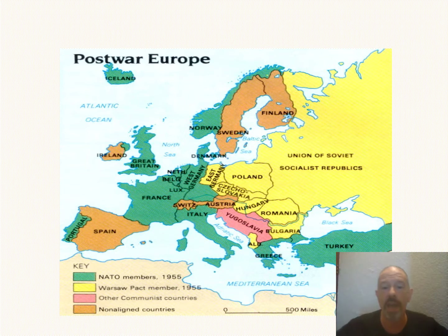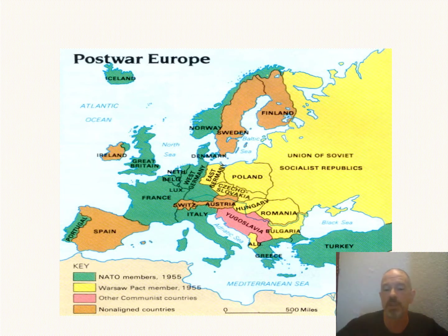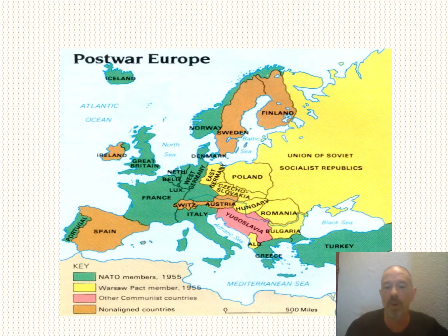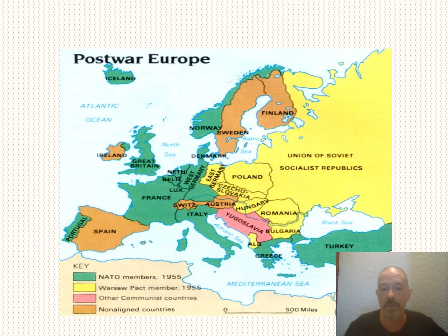This is, by the way, after World War II, kind of what Europe looks like. You will see this little line here, referred to by British Prime Minister Winston Churchill as the Iron Curtain. An Iron Curtain has descended across Europe. From his perspective, all the countries in yellow are Warsaw Pact members, very much dominated by the Soviet Union, with communist governments. Yugoslavia was a communist nation, but non-aligned and not officially associated with the Soviet Union.